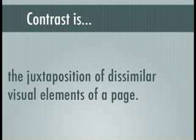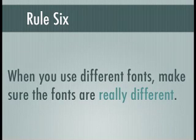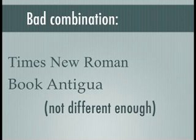Contrast is the juxtaposition of dissimilar visual items on the page — sort of the opposite of continuity. Sometimes you want to emphasize something by making a contrast. Rule six is if you use different fonts, make sure the fonts are radically different. A bad example is going from Times New Roman to Book Antiqua. They're very, very similar — maybe Book Antiqua is slightly wider — but they're not different enough. If you use that for emphasis, it's not going to emphasize it; it'll just give the reader a subconscious feeling that something is wrong.